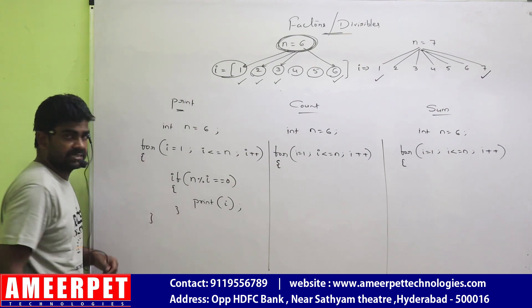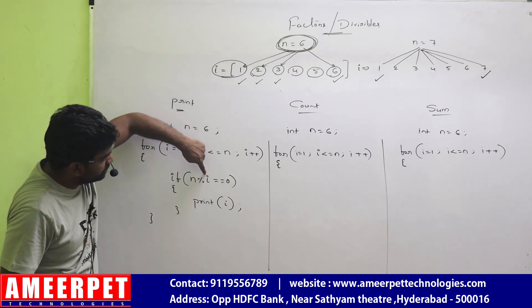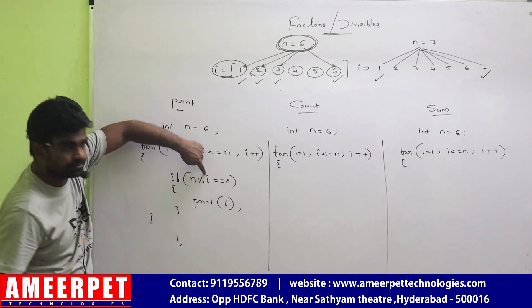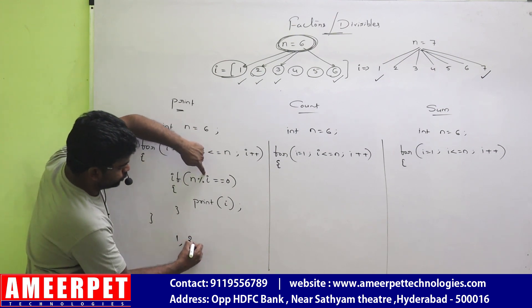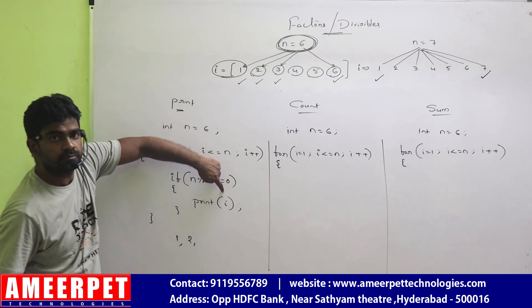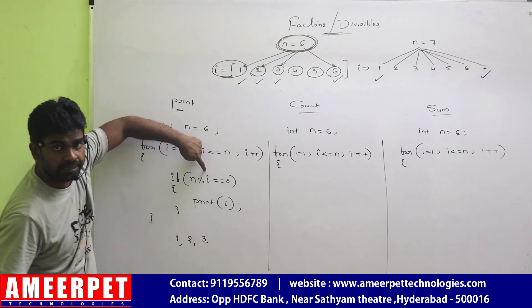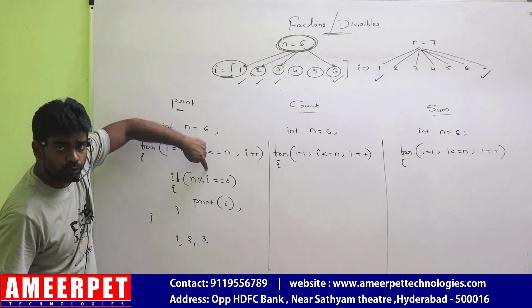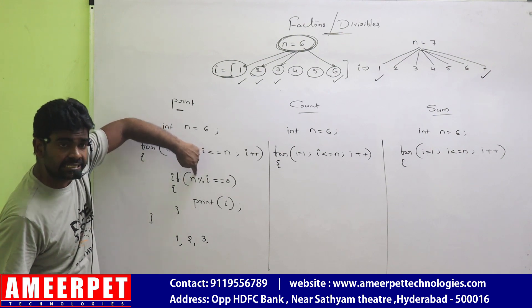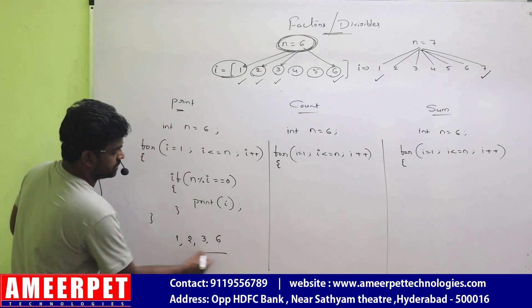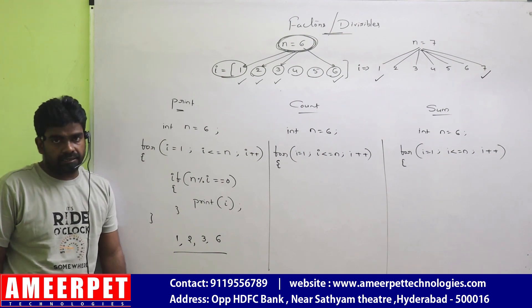Suppose if you take 6: 6 is divisible by 1, so 1 will print. 6 is divisible by 2, so 2 will print. 6 is divisible by 3, so 3 will print. 6 is not divisible by 4 or 5. It is divisible by 6, so 6 will print. These are the factors — printing the factors.